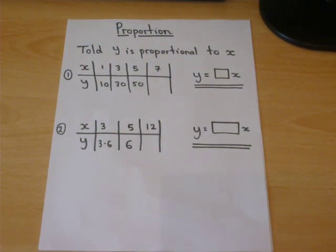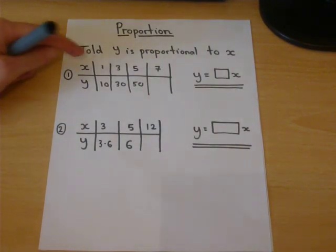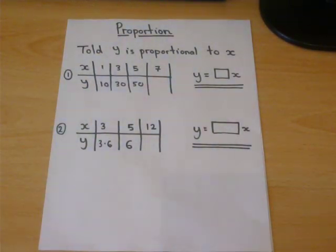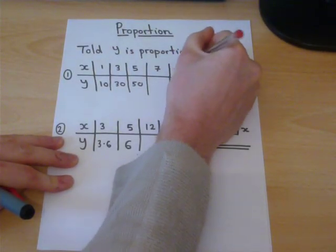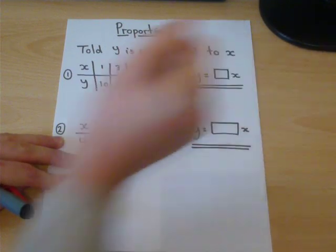Now this one is probably fairly obvious. We're looking for the same pattern. Now proportion means multiplying or dividing. And I think you can see how to get from x to y every time, the x coordinate has been times by 10.